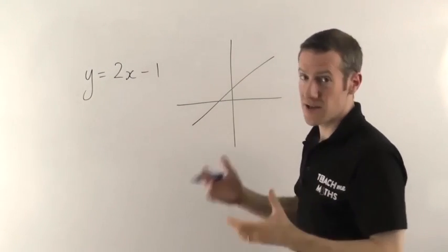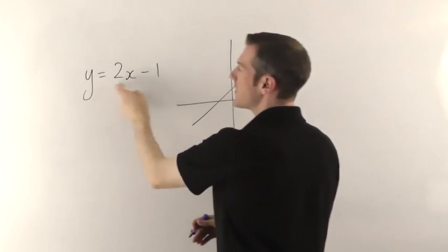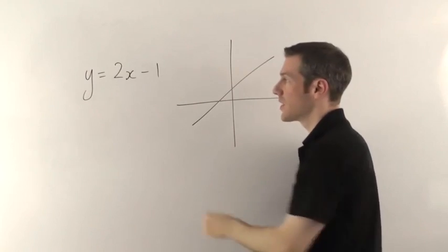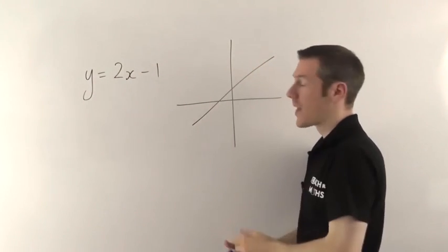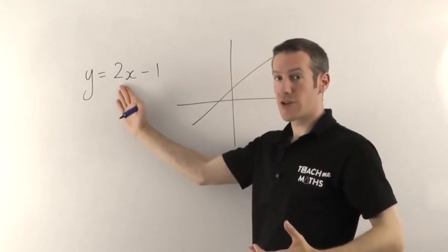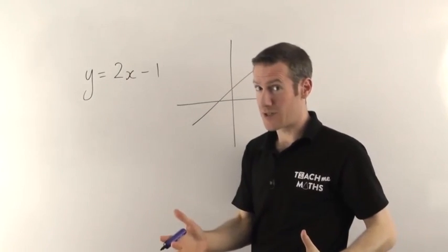I've explained in another video if you start with the equation, how you can draw a straight line from the equation. So we know how to start from that and end up with a straight line. But what happens if you've been given the straight line and you want to find out what the equation is? That's what we're going to do in this video.